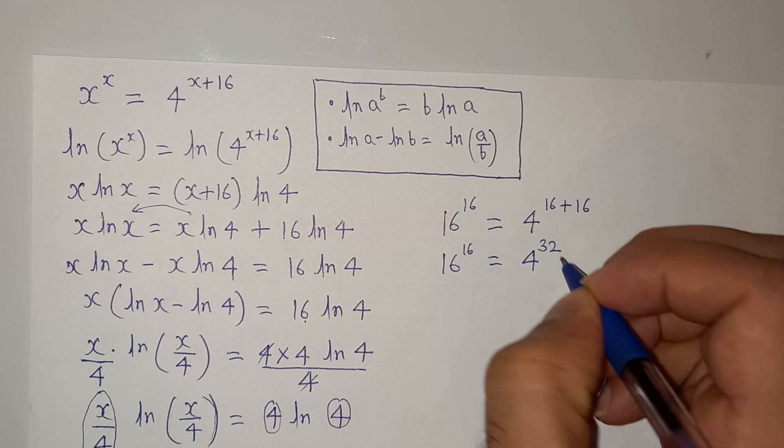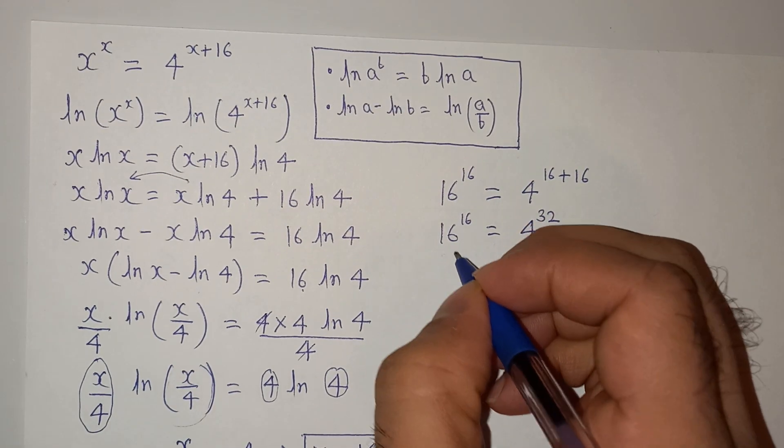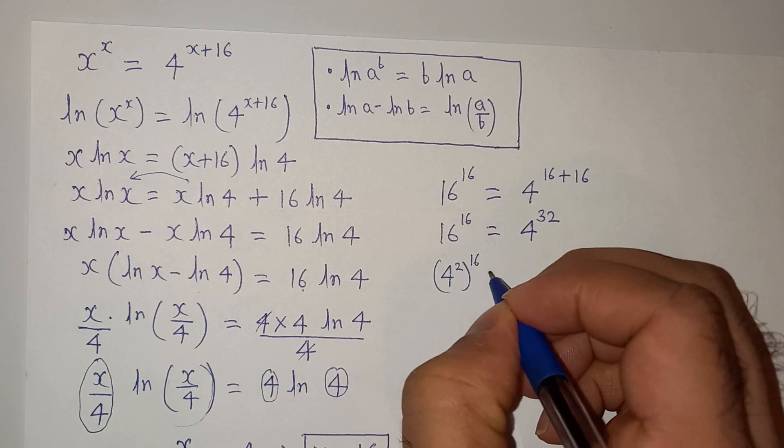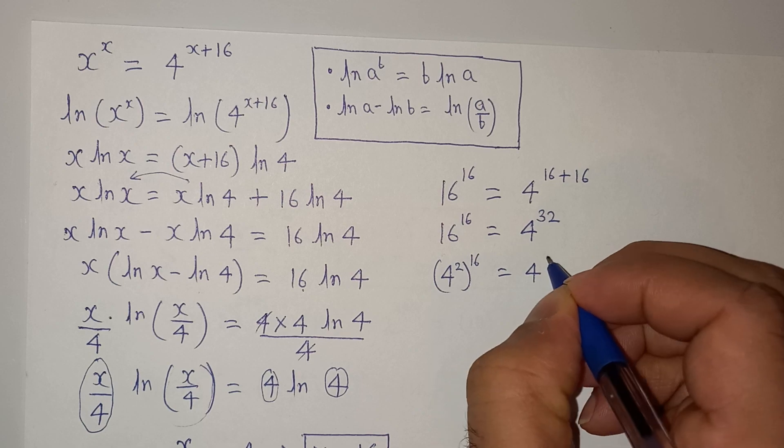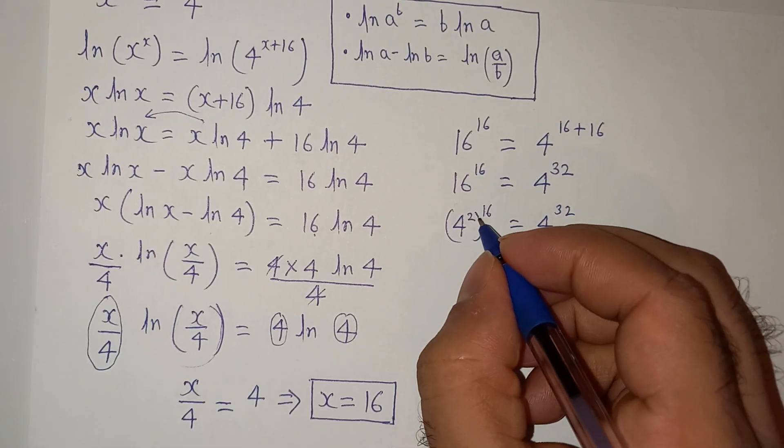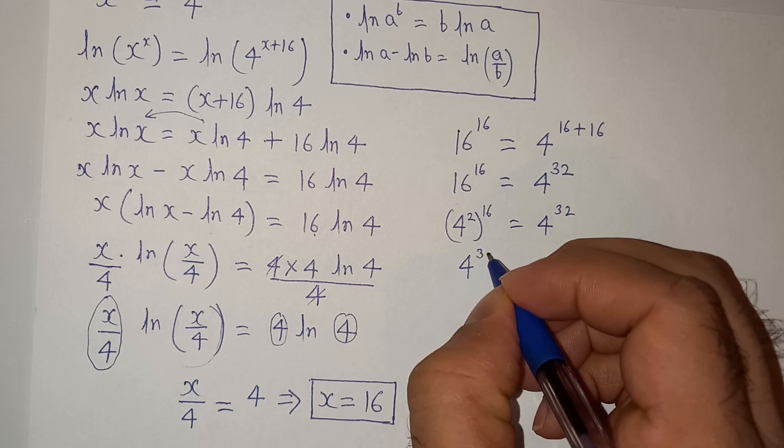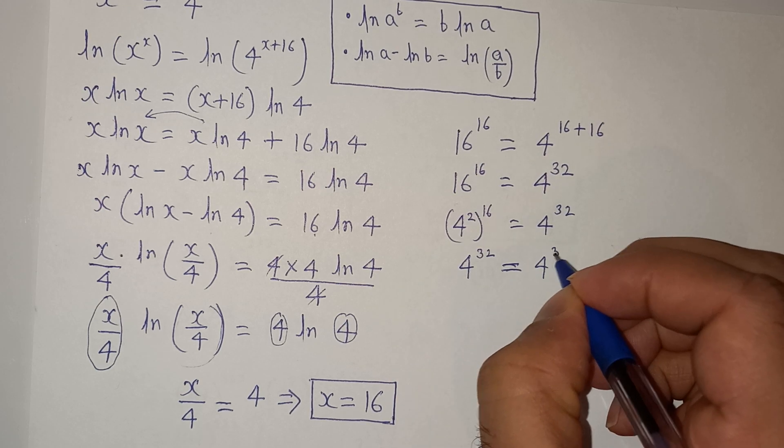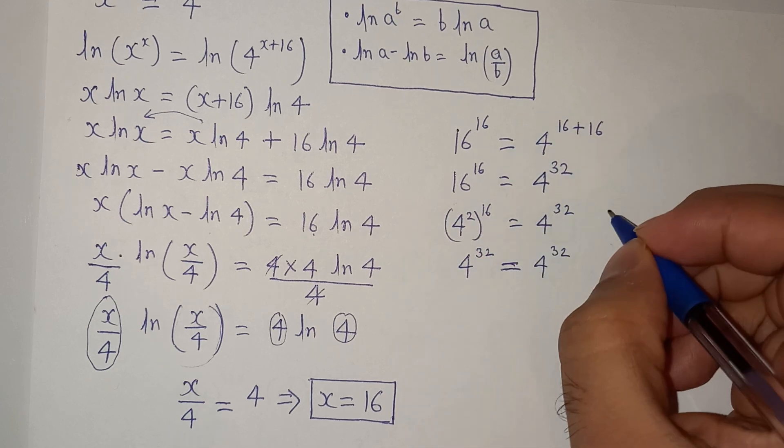Now this 16 can be written as 4 square power 16 equals to 4 power 32. Now this 16 multiplied 2 is 4 power 32, and which is equals to 4 power 32. So this is the exponential rule